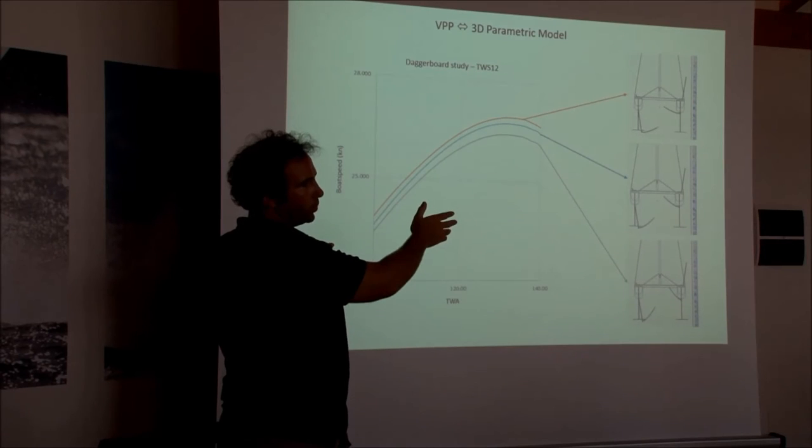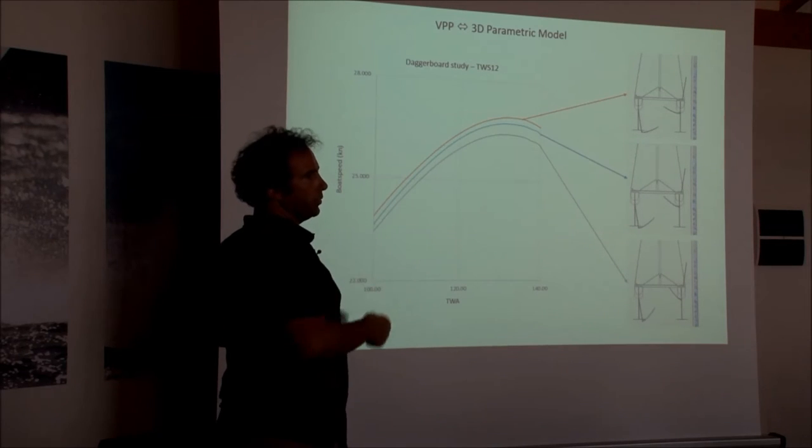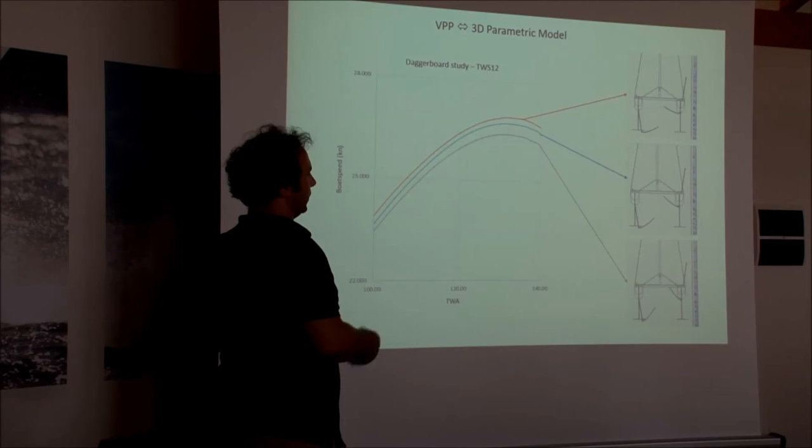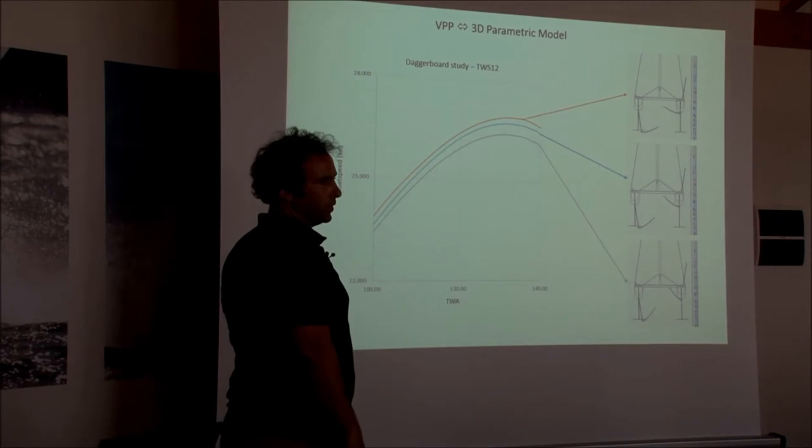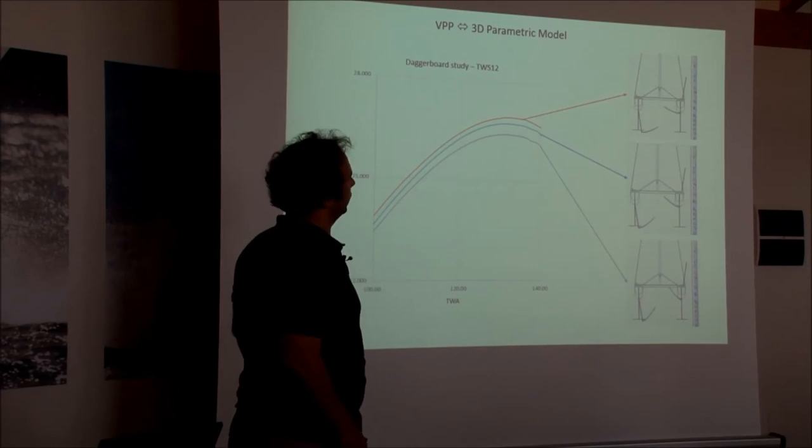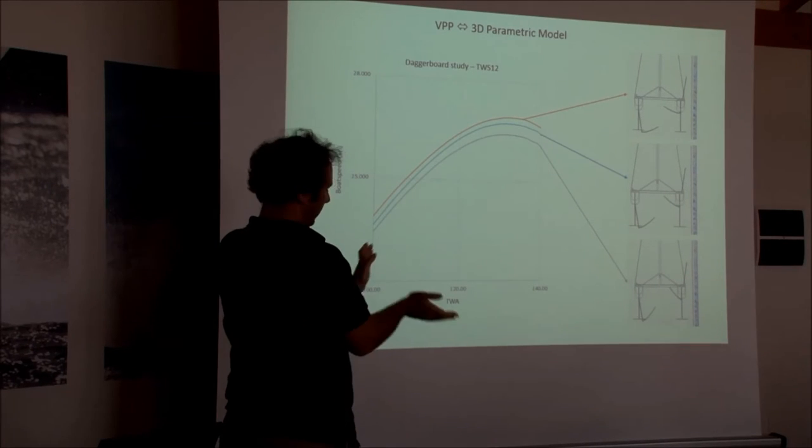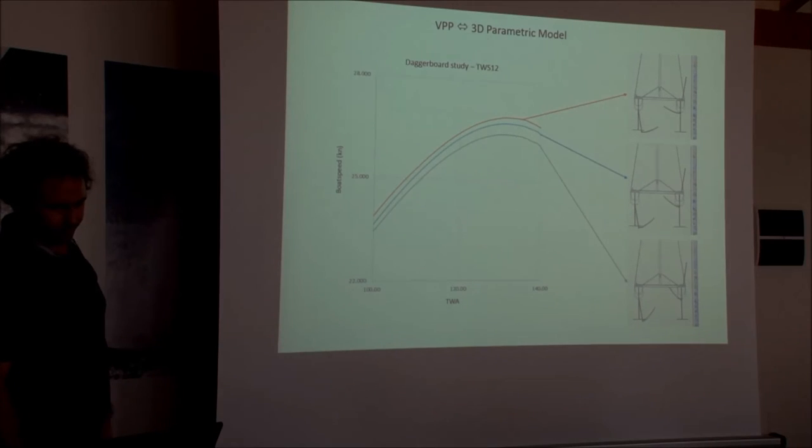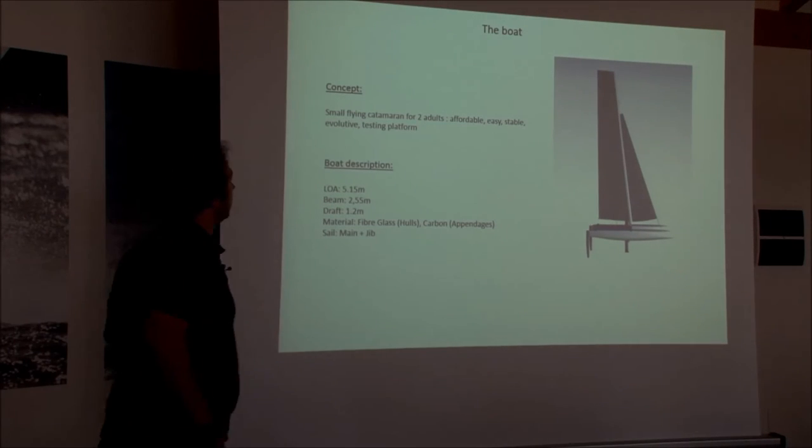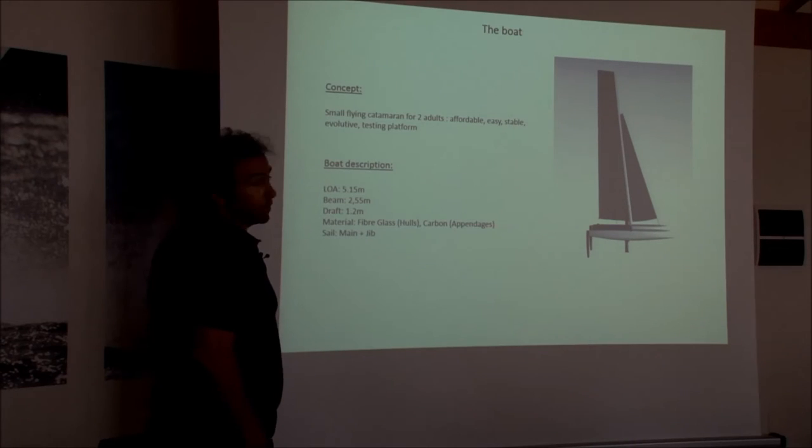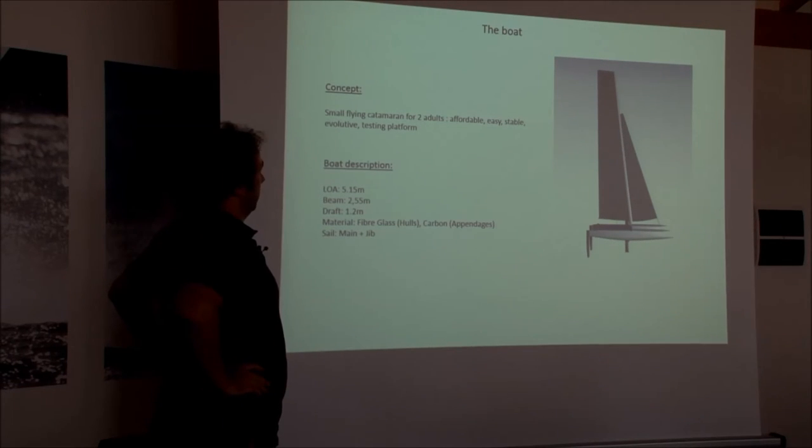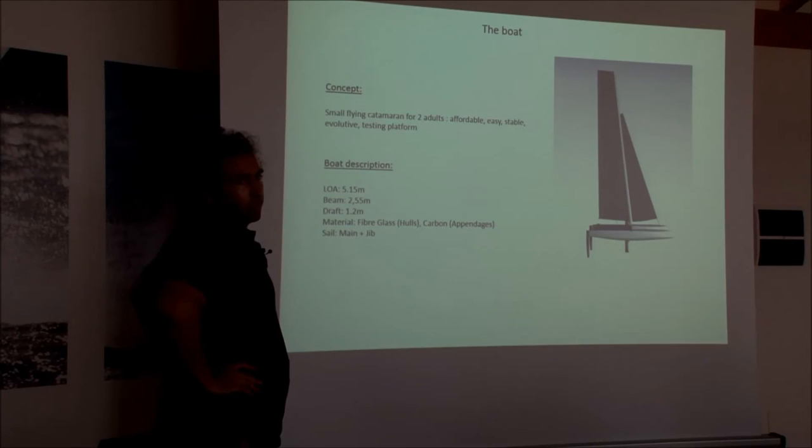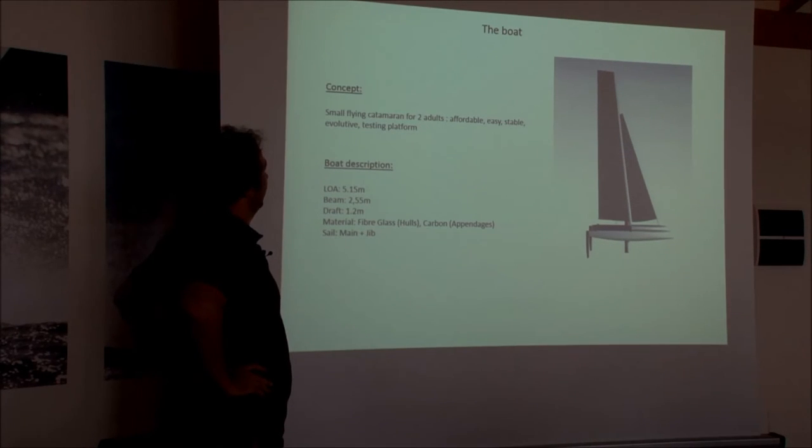That's just a quick example to show the parametric. Each time we test something we have directly an output. You have directly a visualization of what you do. If it looks strange you will see directly that something goes wrong. For example there, we just change the angle between the strut and the tip. So as I commented before, we wanted to make a small flying catamaran for two people. We wanted to be affordable, easy, stable, evolutive.